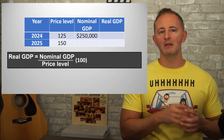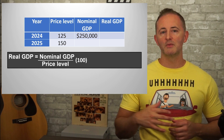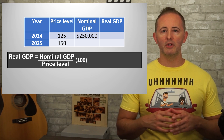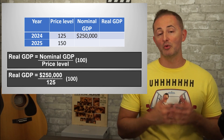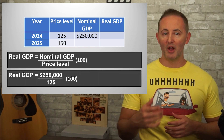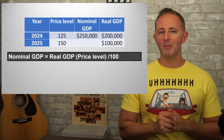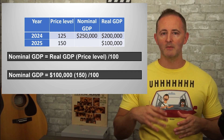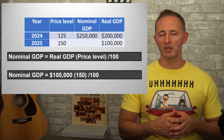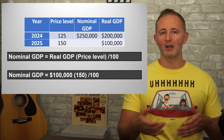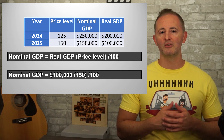Here's another way to calculate real and nominal GDP — this is probably the most common way you'd see it on a test. Real GDP equals nominal GDP divided by the price level times 100. So for 2024, we do $250,000 divided by 125 equals $2,000 times 100 equals $200,000. Nominal GDP can be converted to real GDP by multiplying real GDP times the price level and dividing by 100: $100,000 times 150 divided by 100 equals $150,000.